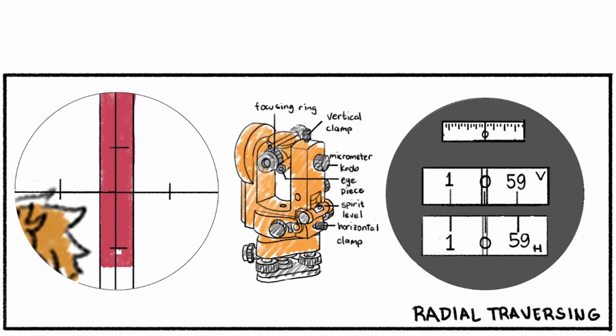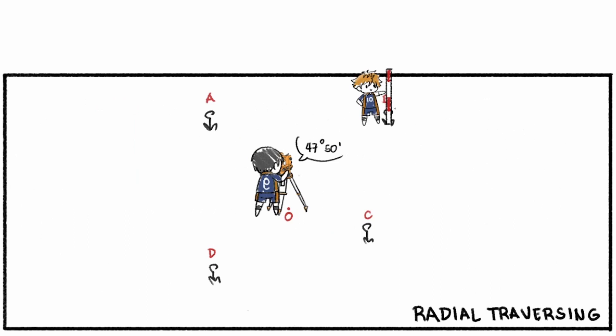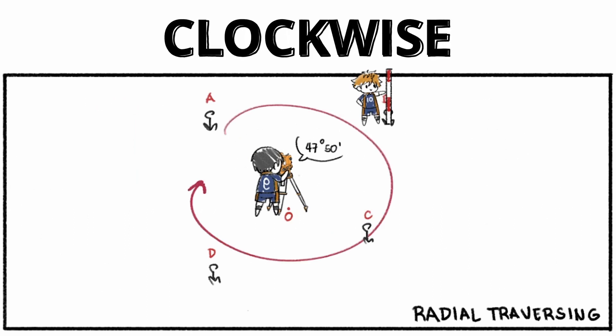Next, move the range pole to the adjacent corner moving in a clockwise direction. So the next point is B.